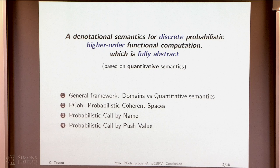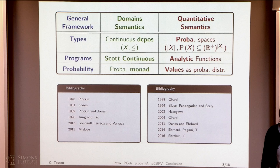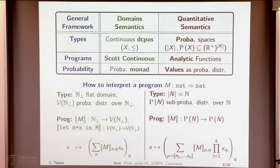I'd like to describe the general framework of our semantics. Among all the semantics in which we can encode probabilistic computation, we have the domain semantics, and we have the quantitative semantics that I will use today, which comes from linear logic. There have been many people in this group involved in one or the other, and I want to explain the similarities and differences between the two approaches.